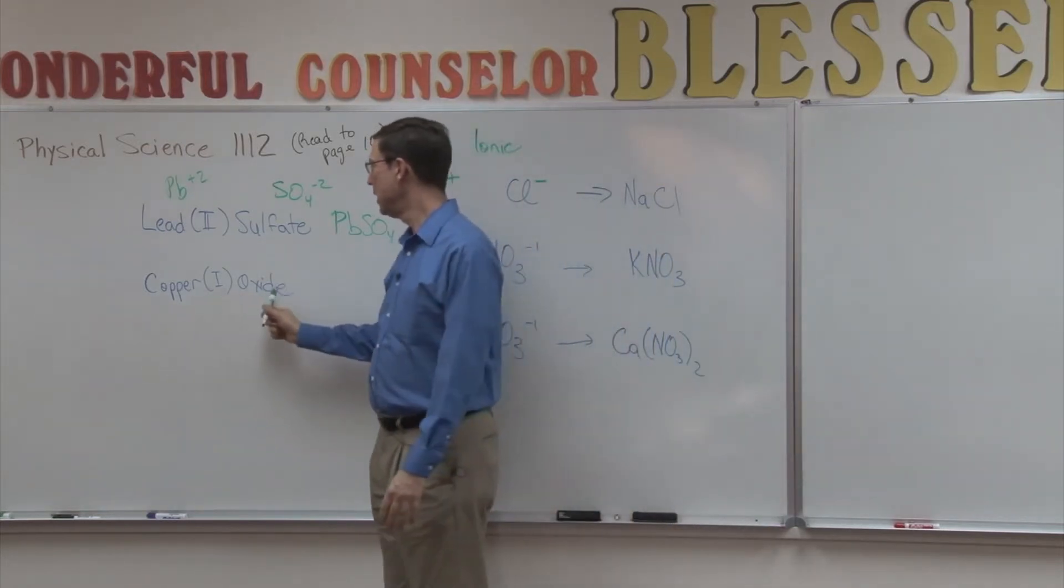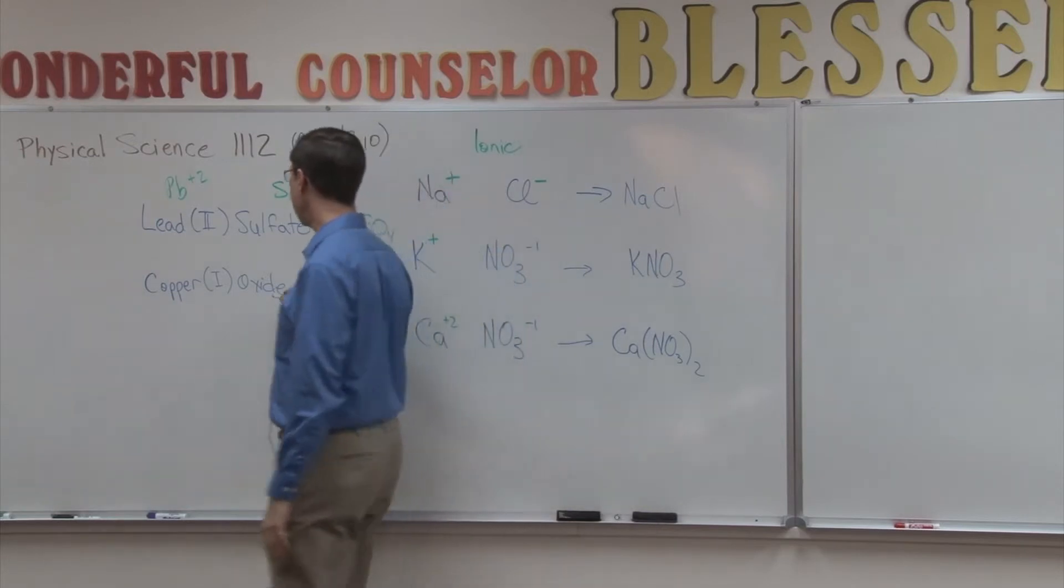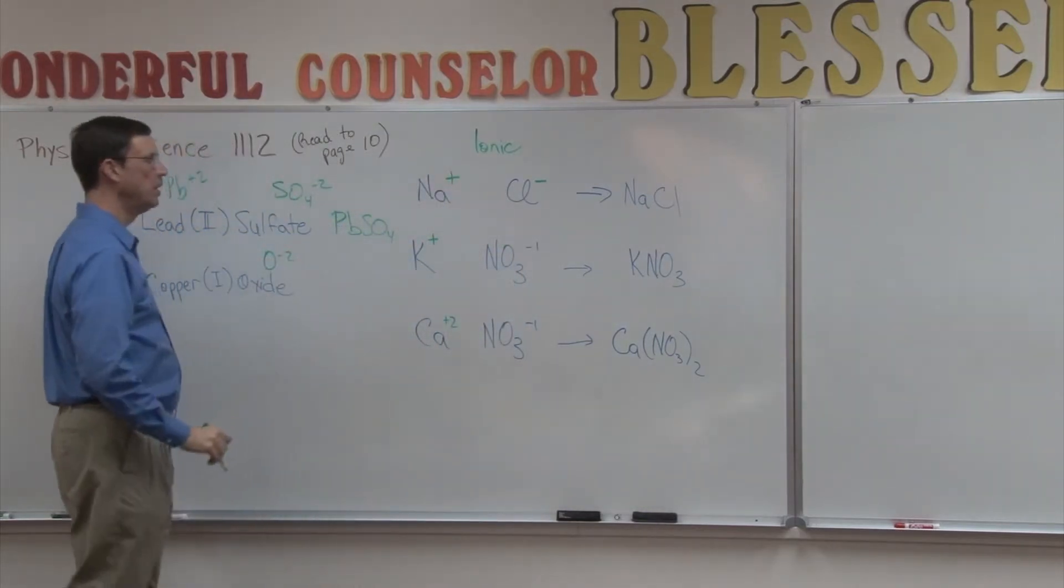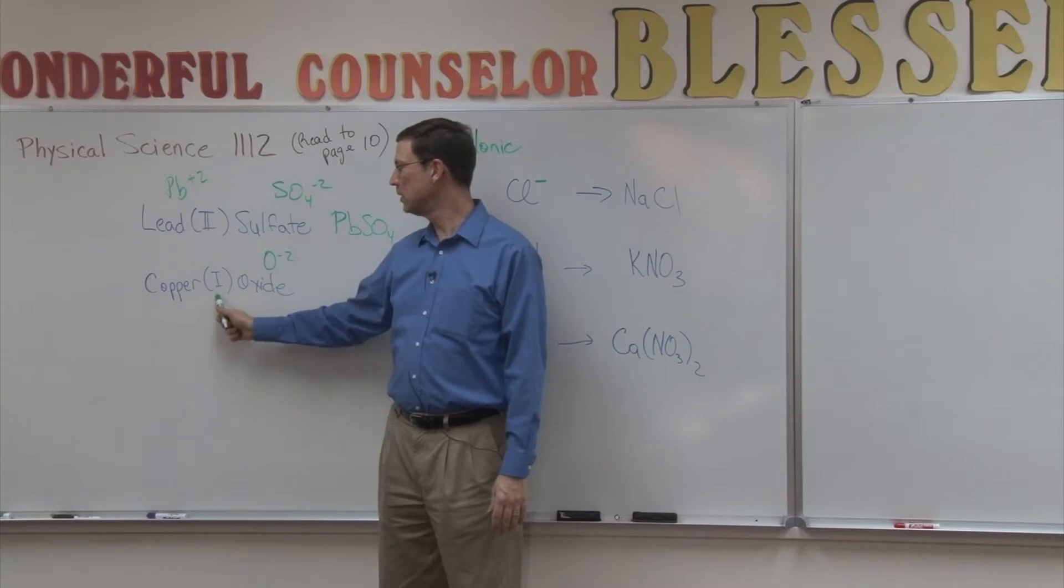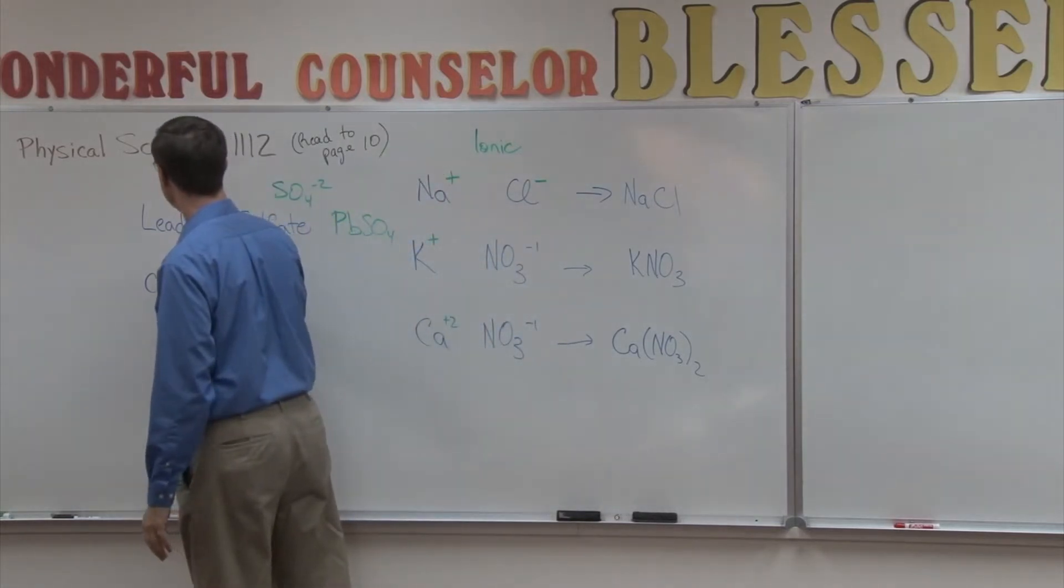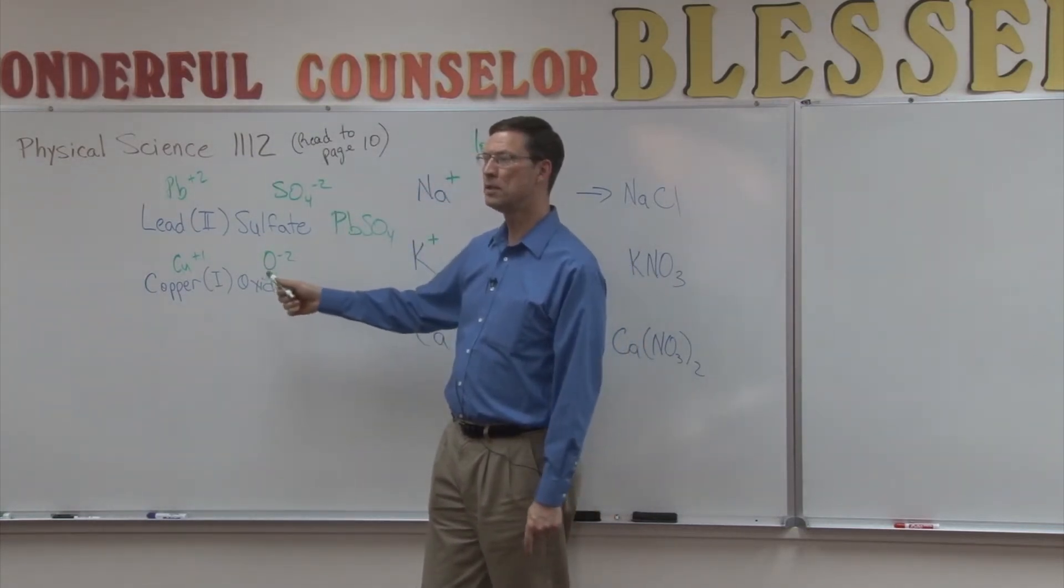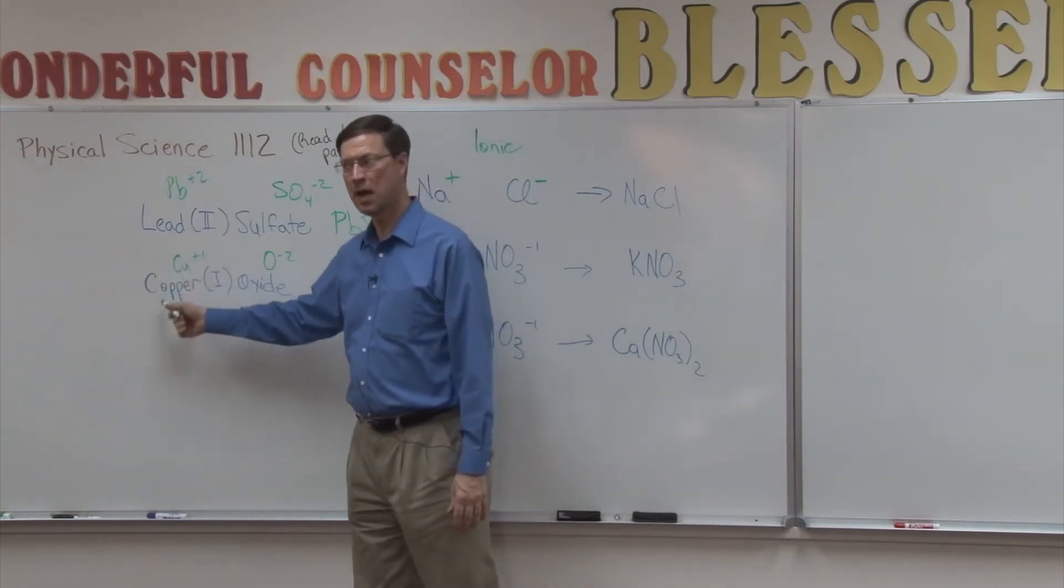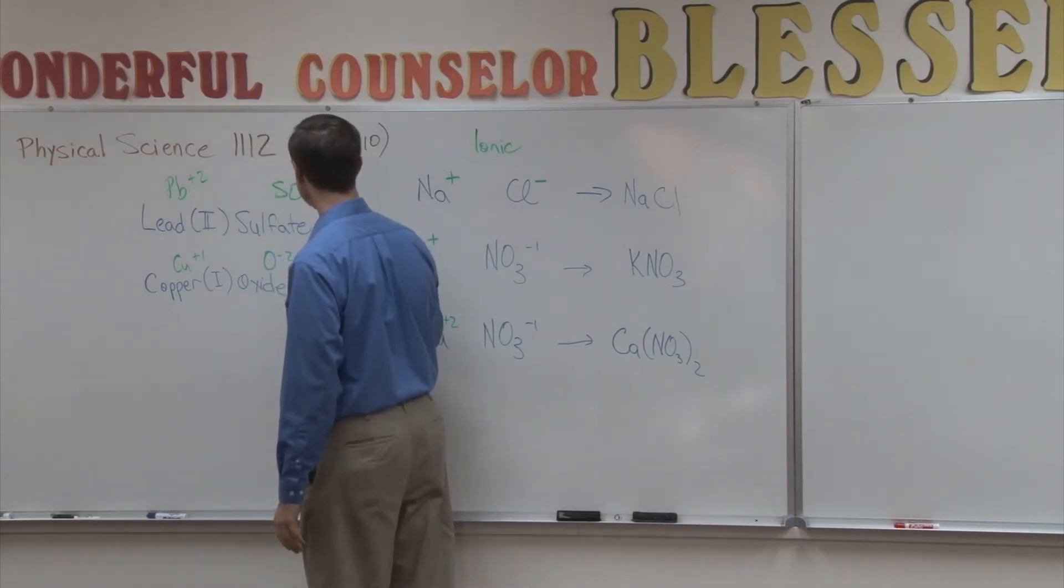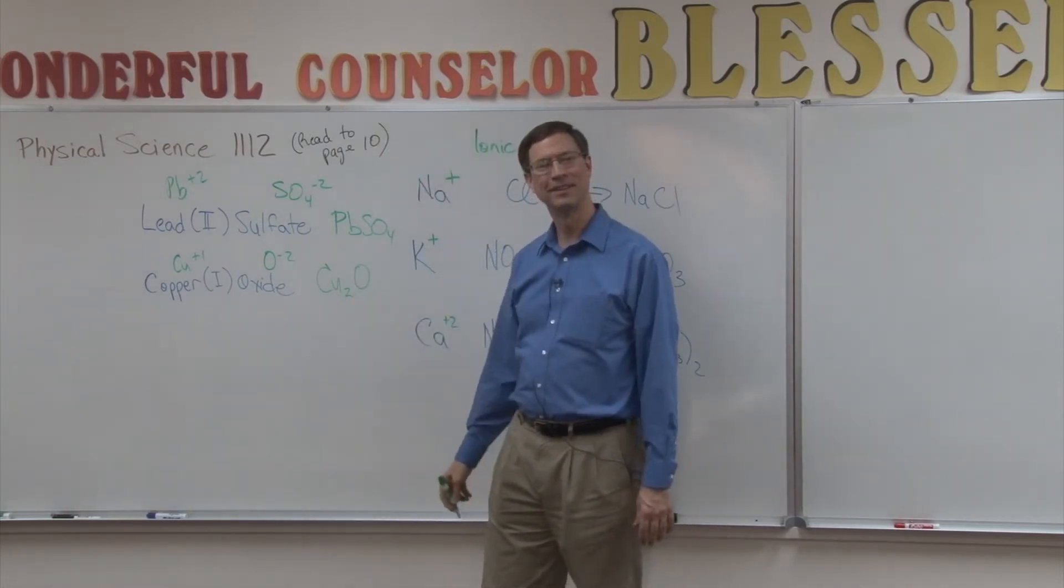Now let's take copper and oxide. Oxygen is in family six, so it needs two electrons to be happy. So it tends to take on negative two. Copper, see the Roman numeral one? This copper Cu means it has a positive one charge. So how am I going to get these two to balance and be a molecule? I'm going to need two of this copper. So the formula for that is going to be Cu2O, copper oxide.